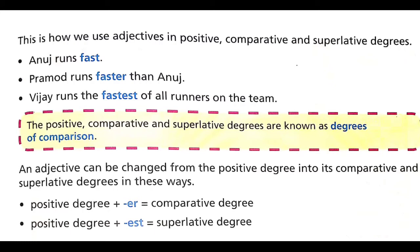This is how we use adjectives in positive, comparative, and superlative degrees. Let's see some more examples: Anuj runs fast. Pramod runs faster than Anuj. Vijay runs the fastest of all runners on the team. In the first sentence, we talk about one person and use fast. In the second, we compare two people and use faster — the ER form. In the third, we compare more people and use fastest — the superlative degree.